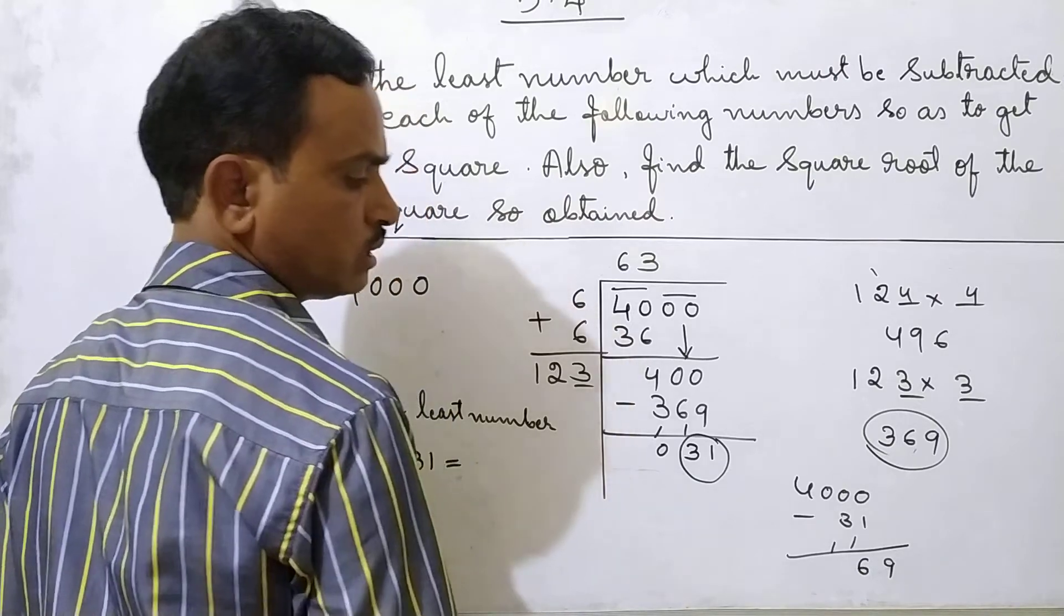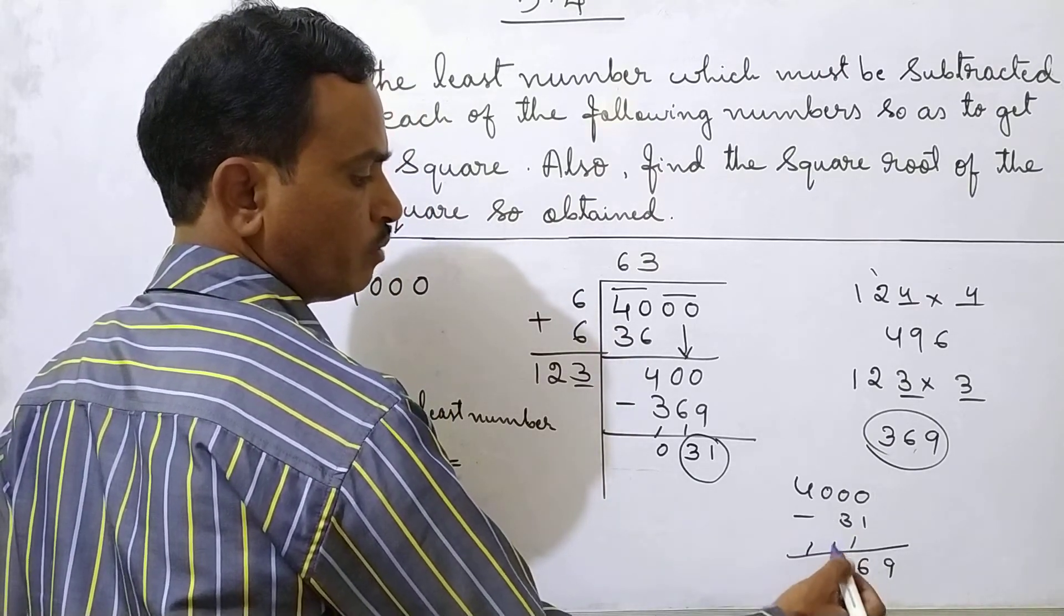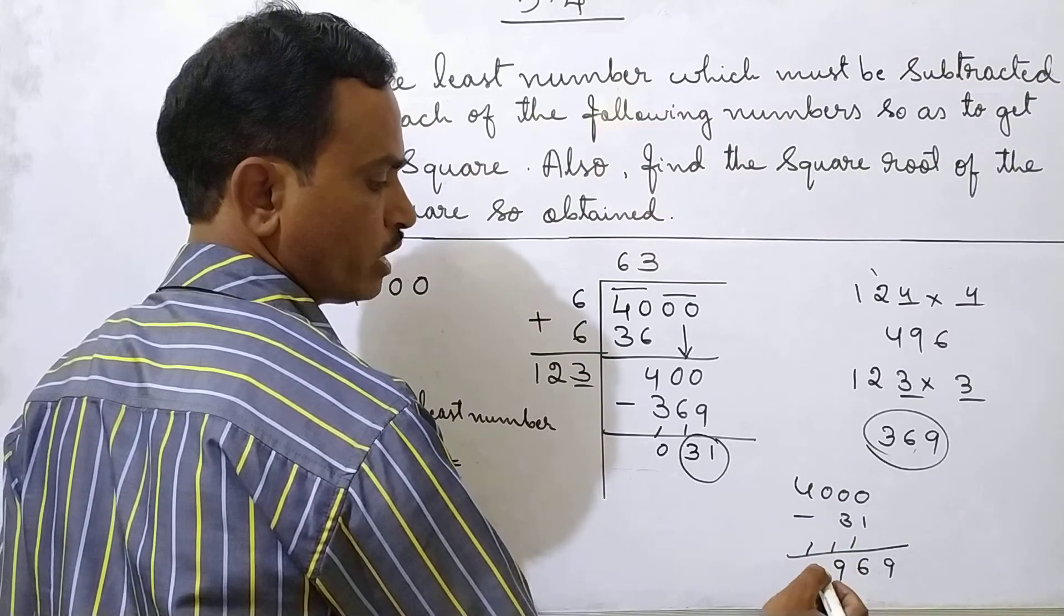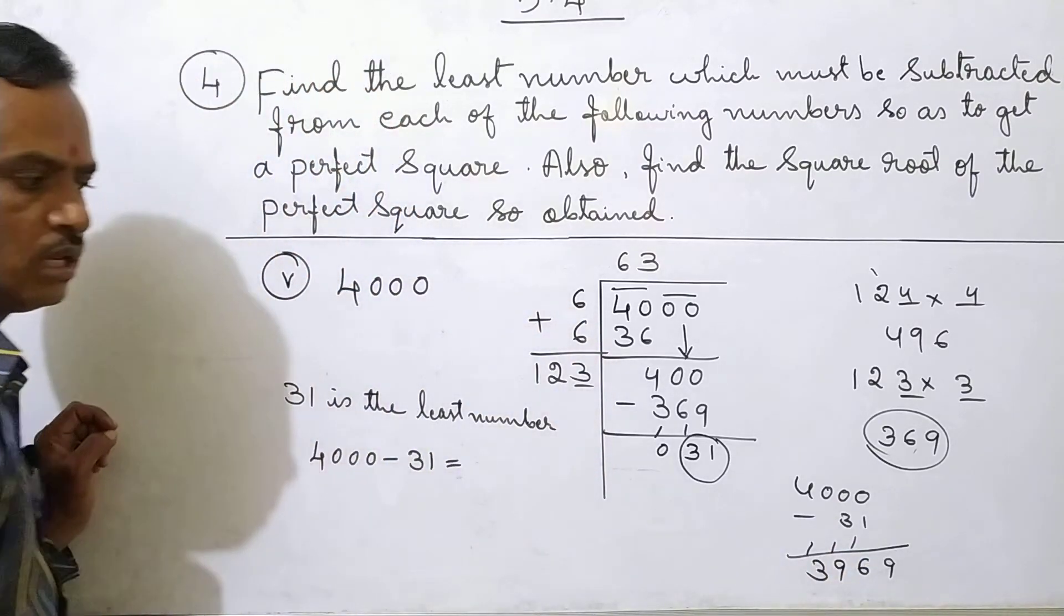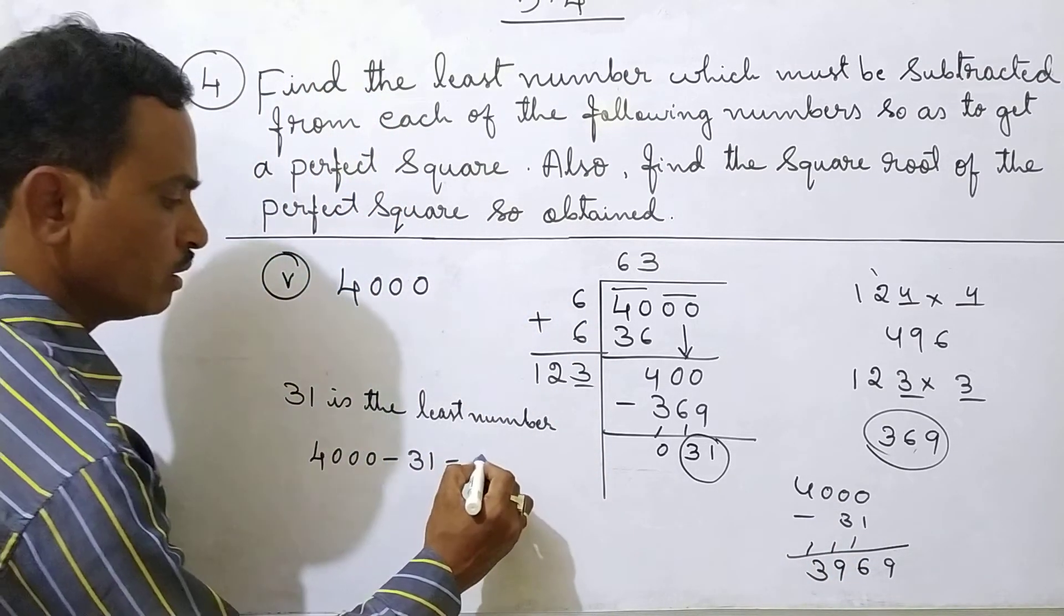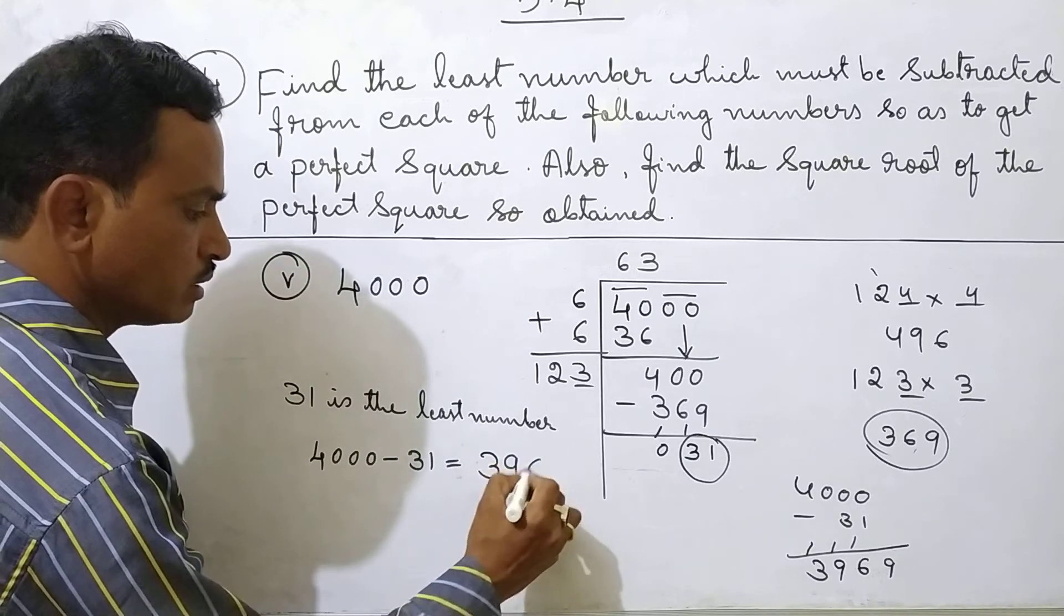Here 6. Next carry 1. 10 minus 1 is 9. 4 minus 1 is 3. 3,9,6,9. 3,9,6,9.